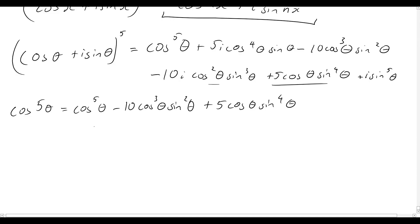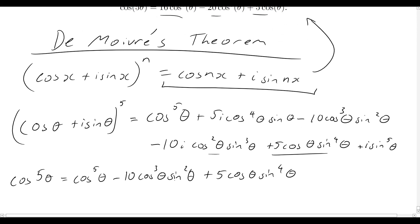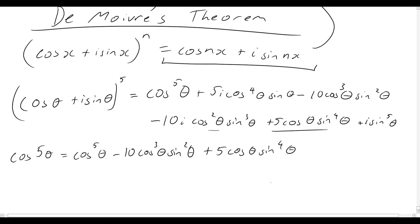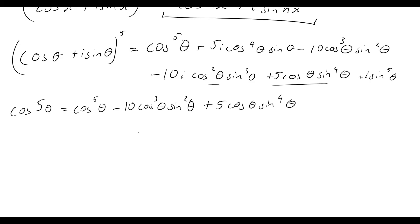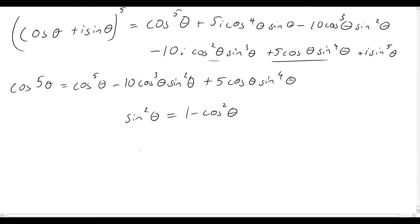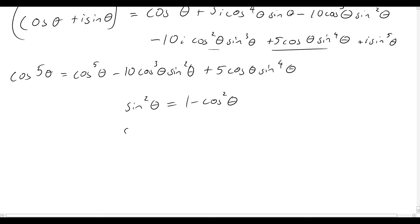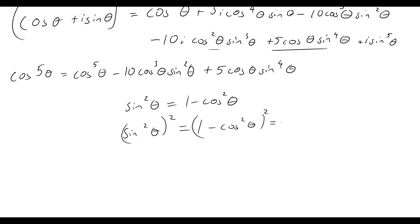Now we have a problem: the expression still contains sin²θ and sin⁴θ, and we want everything in powers of cosine. We can use the identity sin²θ + cos²θ = 1, so sin²θ = 1 − cos²θ. And sin⁴θ would be sin²θ all squared, which is (1 − cos²θ)², giving us 1 − 2cos²θ + cos⁴θ.